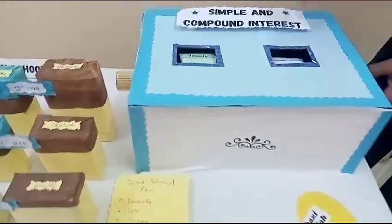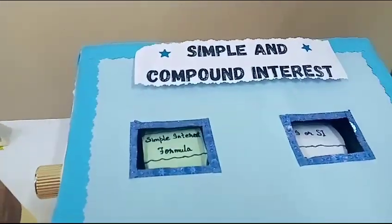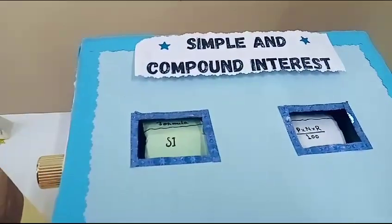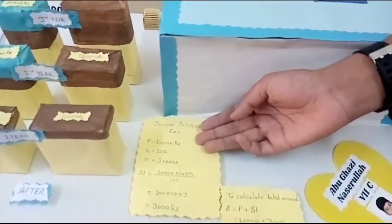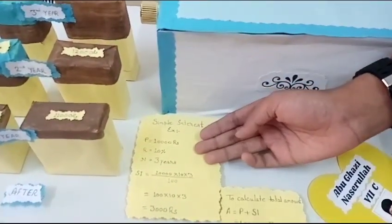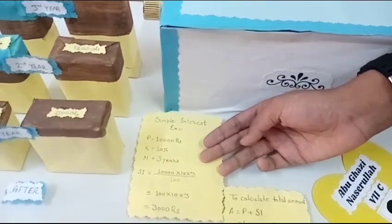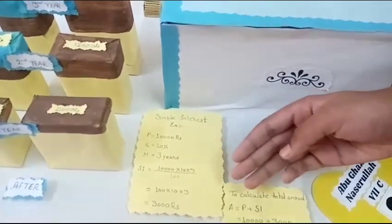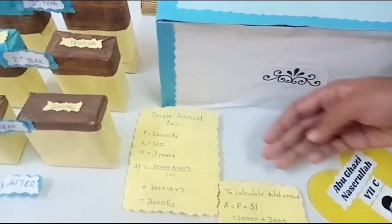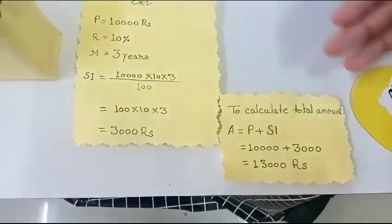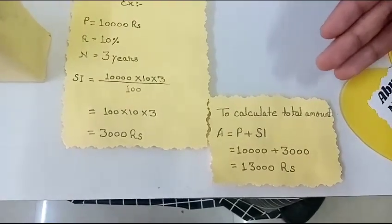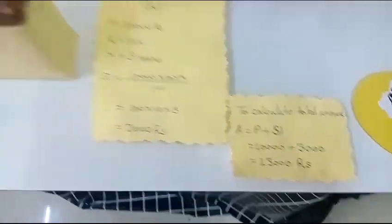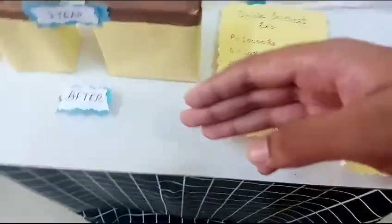The formula of Simple Interest is: SI = P × N × R ÷ 100. For example, with a Principal of 10,000 rupees, a rate of interest of 10%, and number of years 3, the Simple Interest comes to 3,000 rupees. To calculate the total amount, it is Principal plus Simple Interest, which is 13,000 rupees, shown after 1, 2, and 3 years.